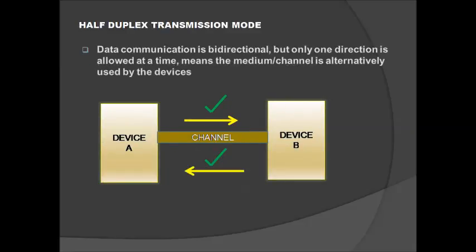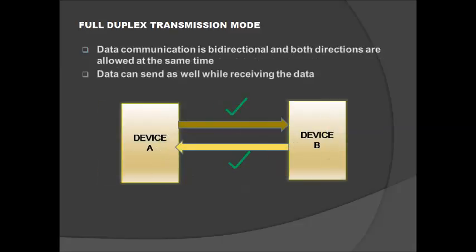The next is duplex transmission mode. Under this we have half duplex and full duplex. In half duplex transmission mode, data communication is bi-directional — unlike simplex which is unidirectional — but only one direction is allowed at a time. The medium or channel is alternately used by the devices. If device A is using the channel to transmit data, device B cannot transmit at the same time. After device A finishes transmission, device B can then transmit. So while device A is transmitting, device B is in receiving mode only, and vice versa.